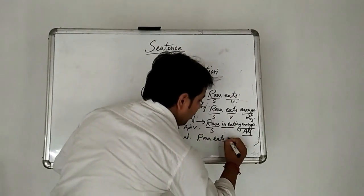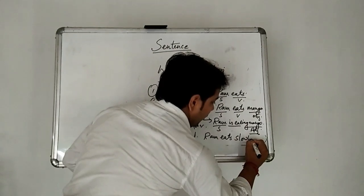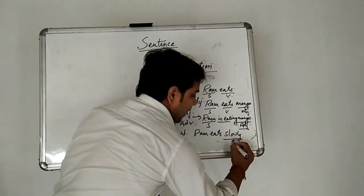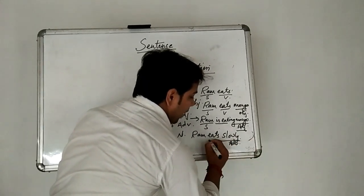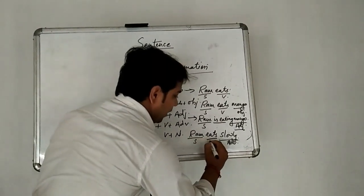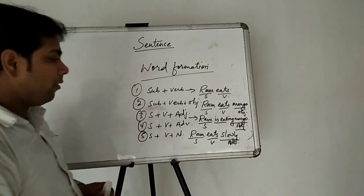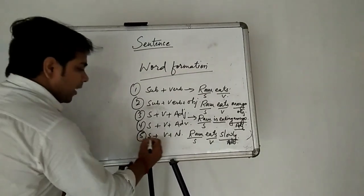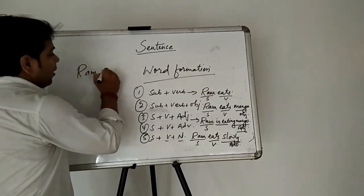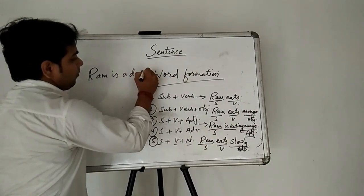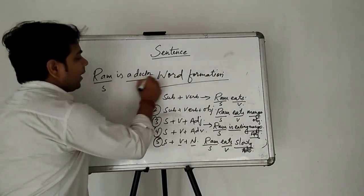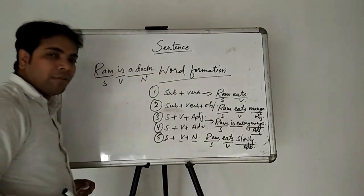For example: Ram eats slowly. How does Ram eat? He eats slowly. That 'slowly' is the adverb which explains about the verb 'eats'. In this sentence, Ram is subject, eats is the verb, and slowly is the adverb. Now the fifth type: subject plus verb plus noun. Ram is a doctor. In this sentence, Ram is the subject, is is the verb, and doctor is a noun.